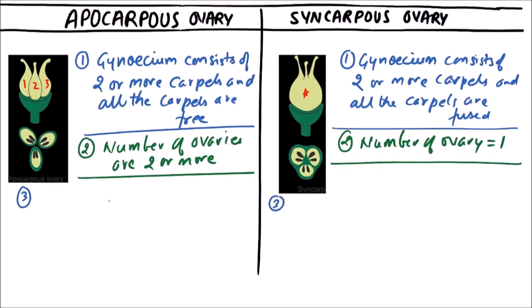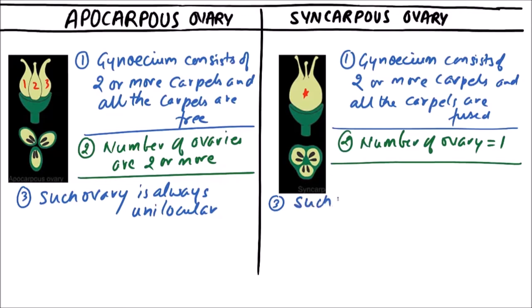In apocarpus ovary, such ovary is always unilocular. In syncarpus ovary, the ovary can be unilocular or multilocular.